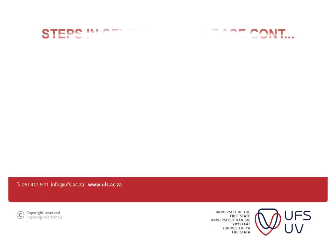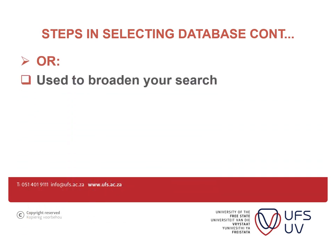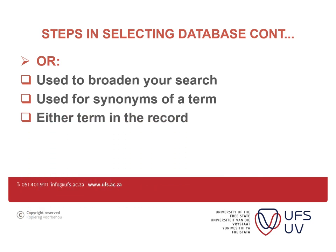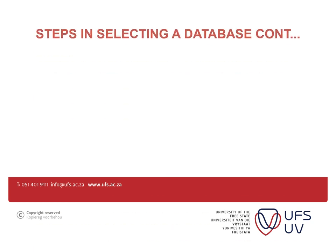Continuing with Boolean operators: OR is used to broaden your search for synonyms, and either of the terms should appear somewhere in the record. For instance, if your topic is service delivery in towns or cities, one of the two terms should appear in the record, since cities and towns are synonyms or related terms. NOT is used to exclude words from your search results and to narrow your search. For instance, if you are looking for berries, you would say 'berries NOT strawberries'.